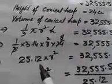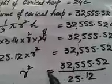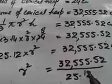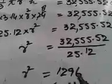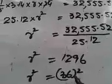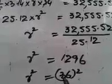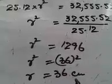We get 25.12 multiplied by r squared equals 32,555.52. Moving 25.12 to the right side, we divide: 32,555.52 divided by 25.12 equals 1296. So r squared equals 1296, which is 36 squared. Therefore r equals 36. The radius of the conical heap is 36 cm.